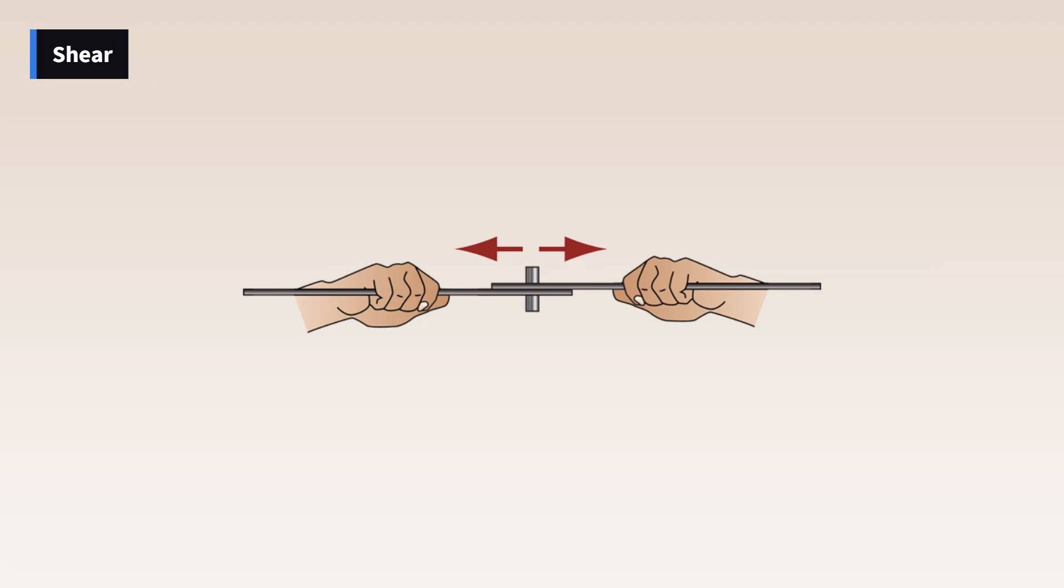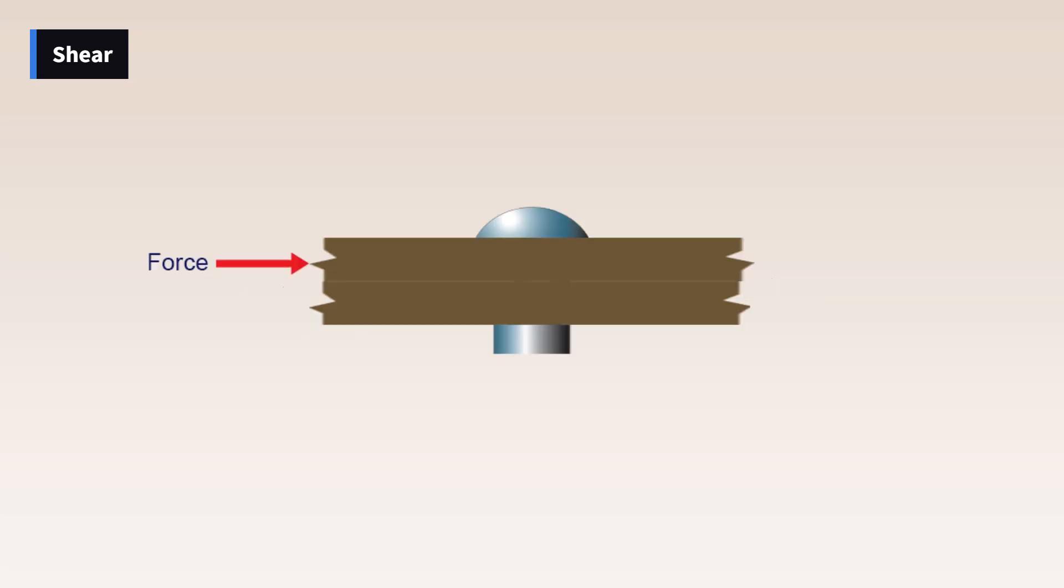Shear is the stress that resists the force tending to cause one layer of a material to slide over an adjacent layer. Two riveted plates in tension subject the rivets to a shearing force. Usually, the shearing strength of a material is either equal to or less than its tensile or compressive strength.